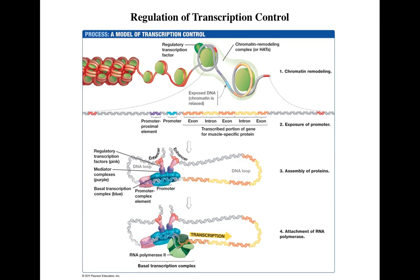Yesterday we talked about transcription factors, and today we will talk about the regulation of transcription control. There are four steps in this model: first, chromatin remodeling; second, exposure of the promoter; third, assembly of proteins; and fourth, attachment of RNA polymerase. Let's look at them one by one.